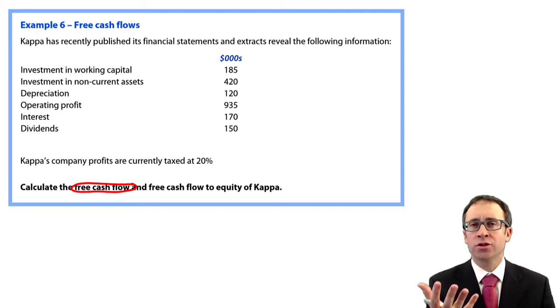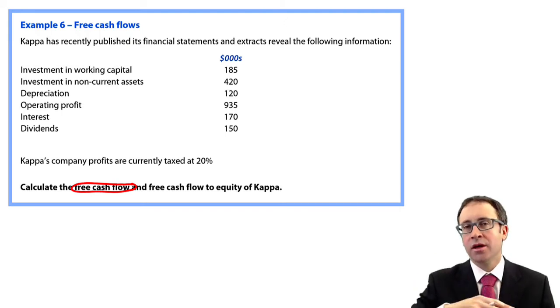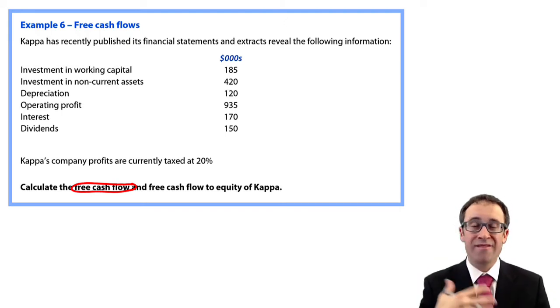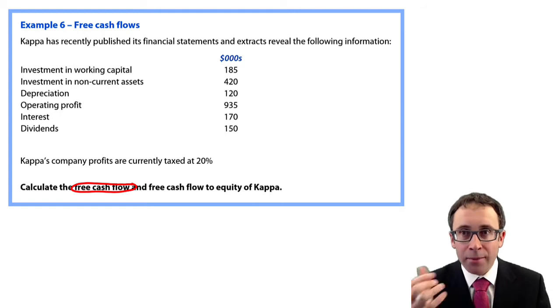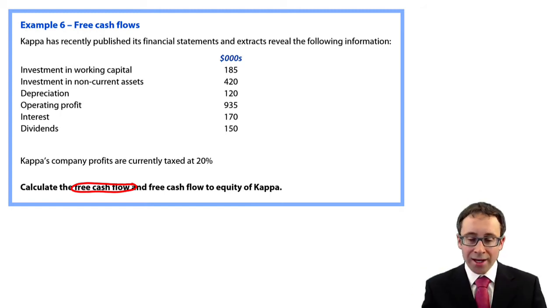So we adjust your operating profit, adjust for non-cash items, adjust for any investments that you make in non-current assets, adjust for any changes in working capital, and any tax payments that we had.